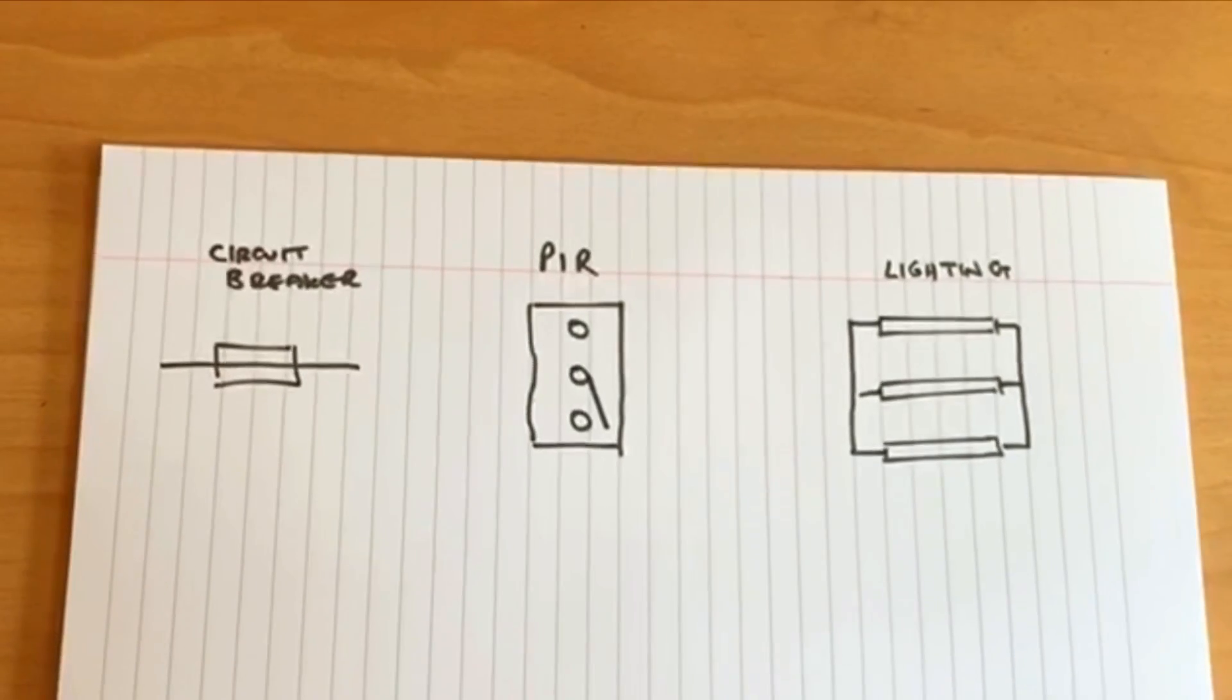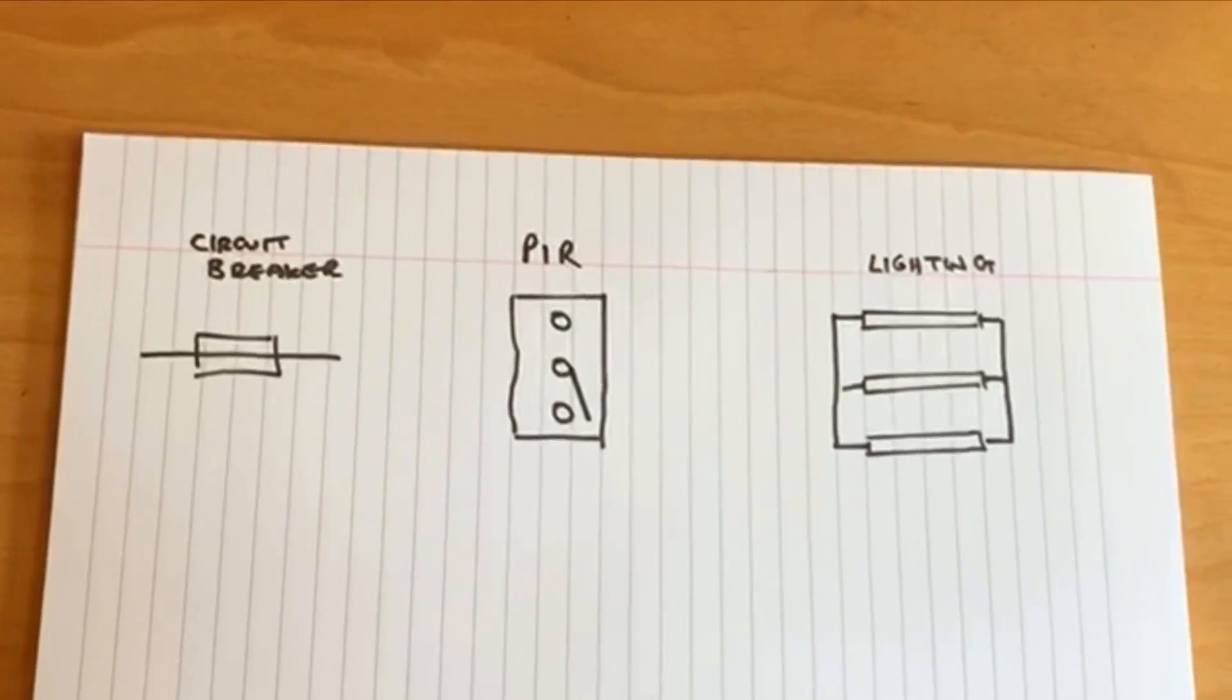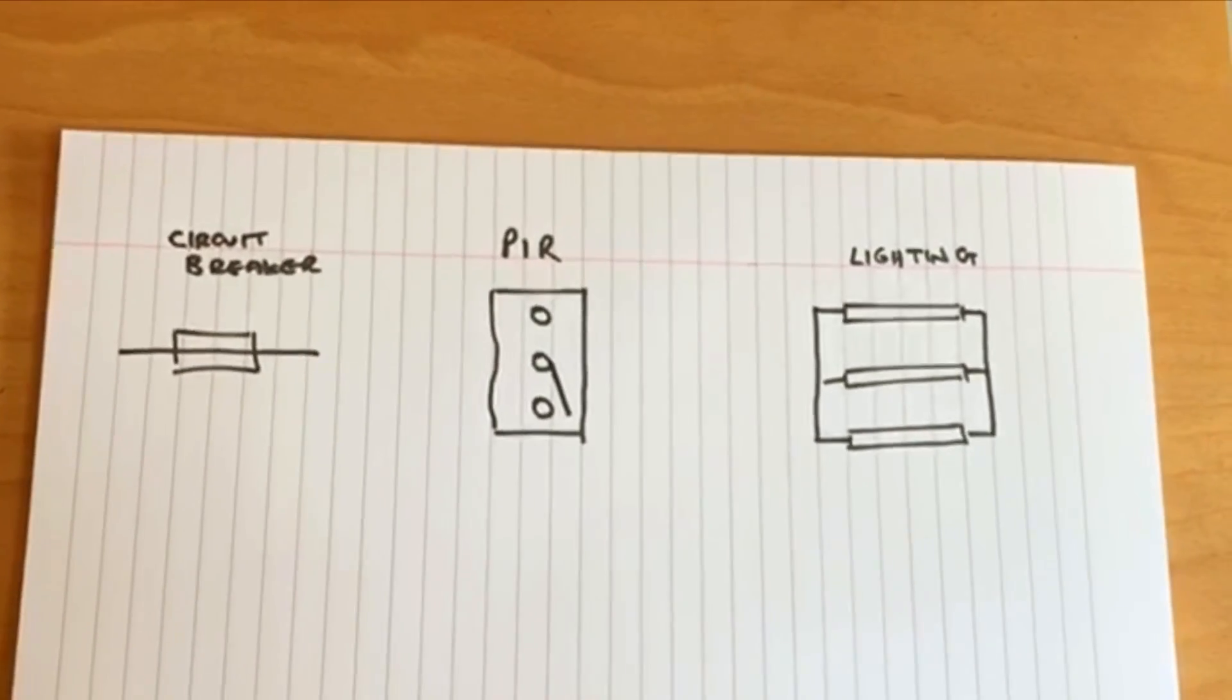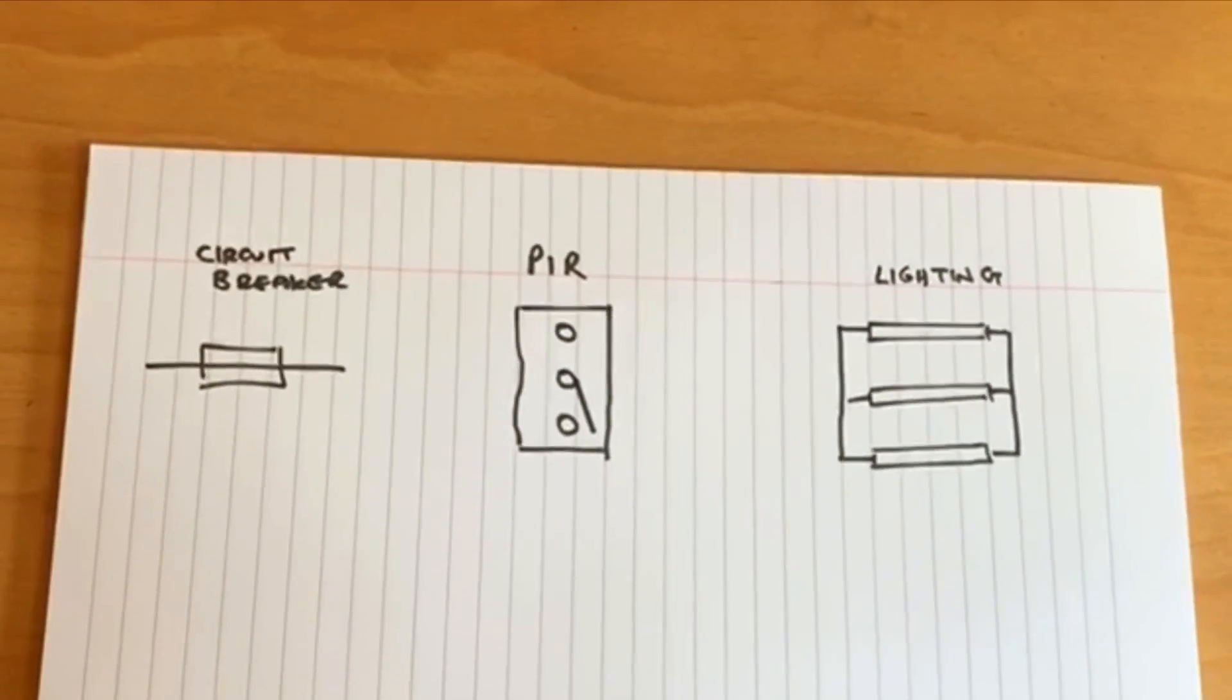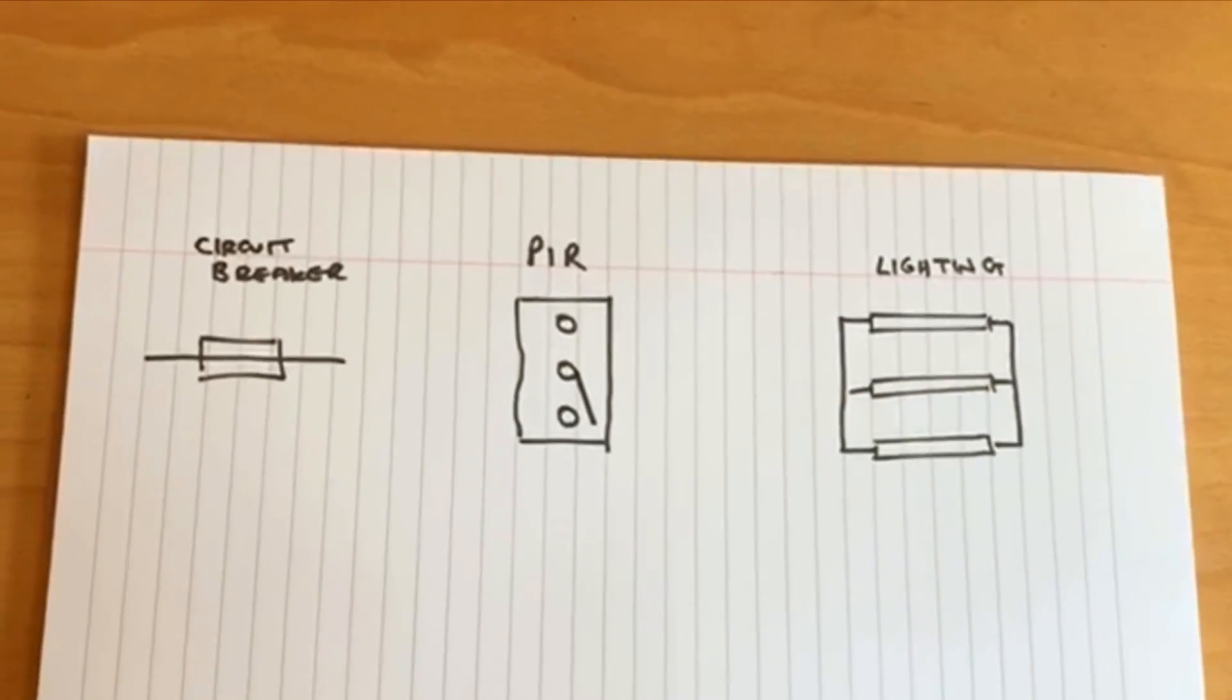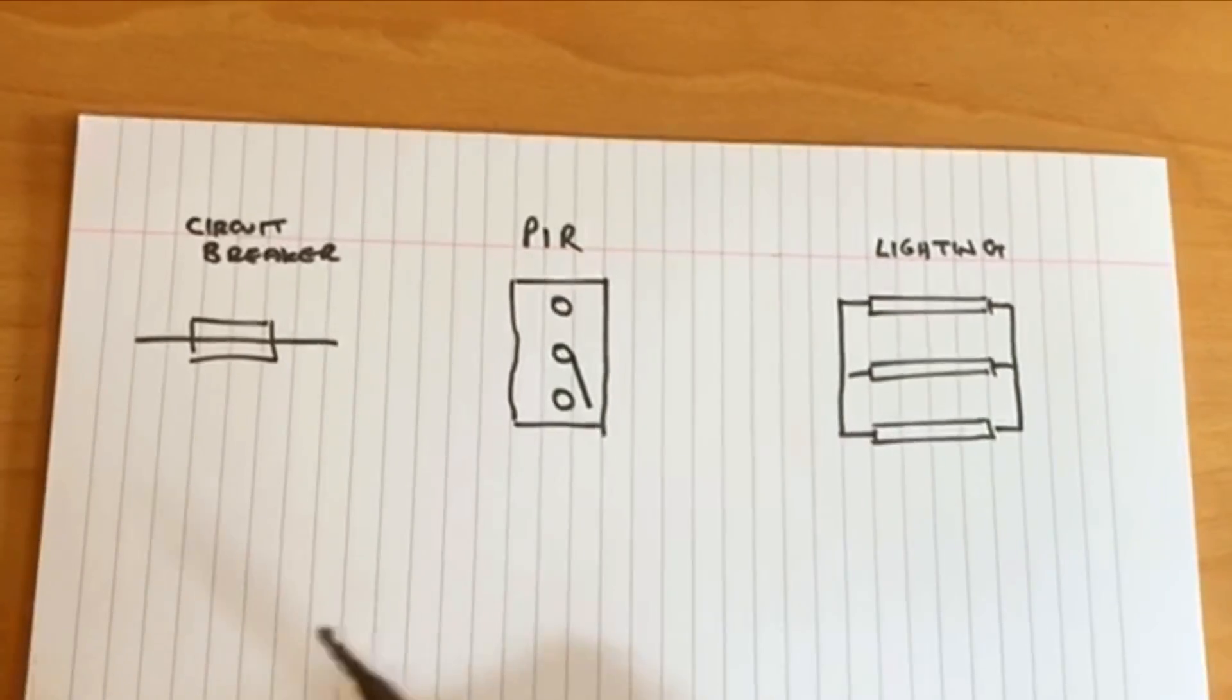The first thing to think about with a PIR: generally there's four connections. There's usually a supply live connection, a switch live connection, and then there's usually two neutral connections, but both of those neutral connections are linked together so I'm just going to draw it as one here.